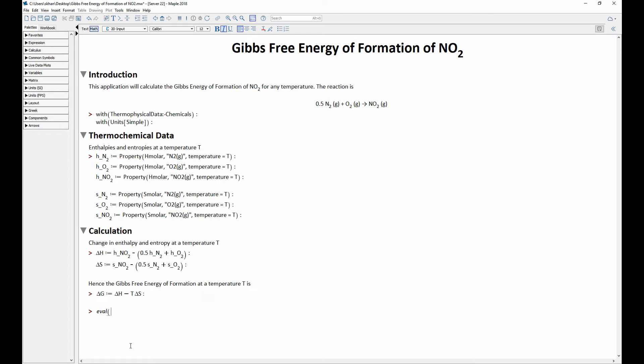Other physical properties can be derived from the data. Here we've defined some equations that give the Gibbs free energy of formation of nitrogen dioxide for any temperature. We then evaluate the Gibbs free energy at standard temperature and then 1000 kelvins.